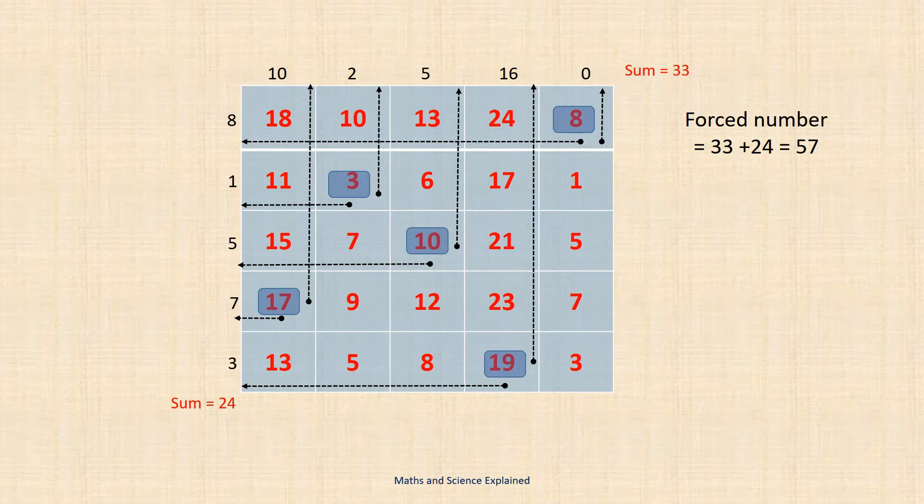For a party trick you could ask somebody to choose a number say 42 and then to break this number up into any 10 numbers which can then be used as the generating numbers. The resulting table will then always force a sum of 42.